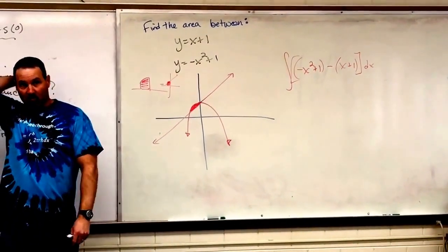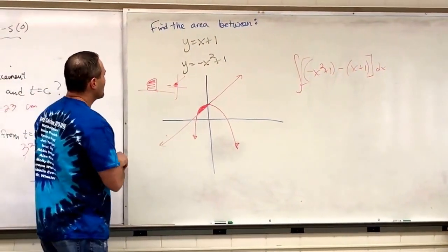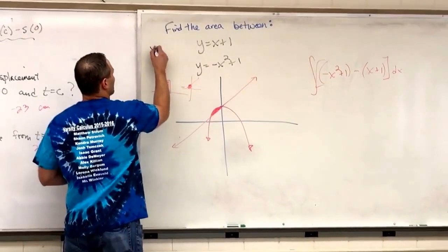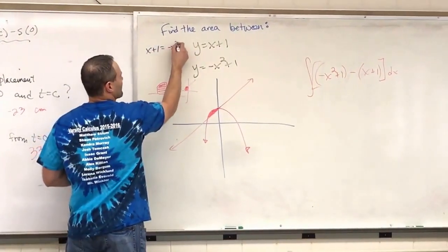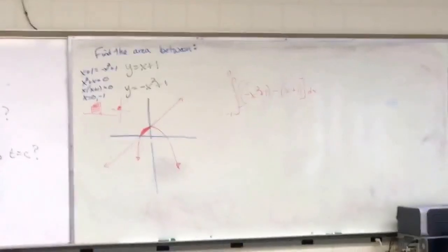So, now we have to find out points of intersection. Okay? So, set those equal to each other. Book.